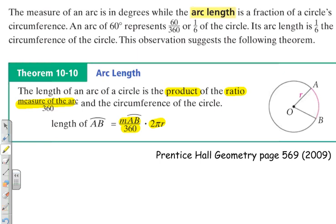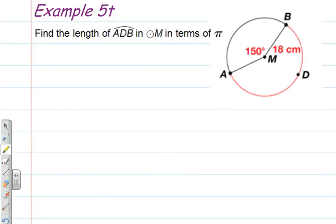So let's see how this arc length theorem works with an example. Example 5t. Find the length of arc ADB in circle M in terms of pi. This will be important later in terms of pi. We're not going to be approximating it. We're going to leave it in terms of pi, which is more exact. First thing I like to do is identify arc ADB on the diagram, and that's pretty easy. It's the major arc highlighted in red. I'm going around and coloring the points blue.